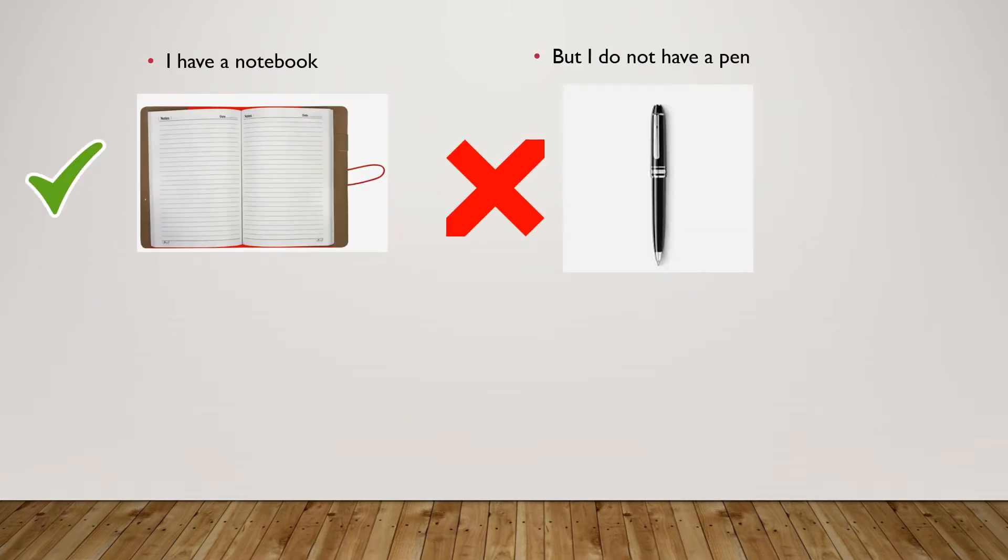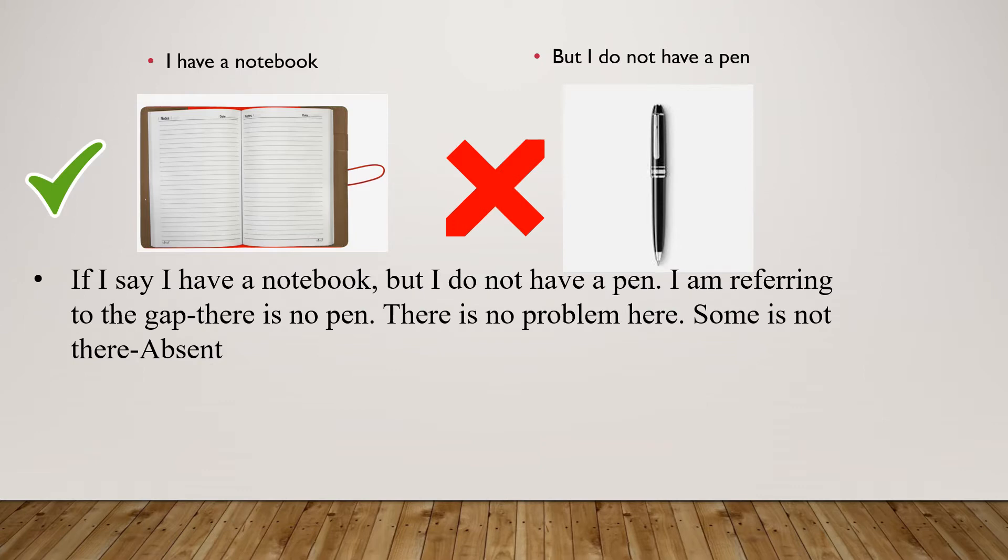For example, if I say I have a notebook but I don't have a pen, I'm referring to the gap that there is no pen. There is no problem here, I just don't have a pen but I have a notebook. Something is not there, something missing or absent. So if I'm referring to that, I'm just referring to a gap, not a problem.